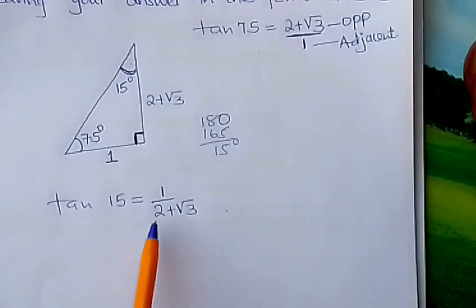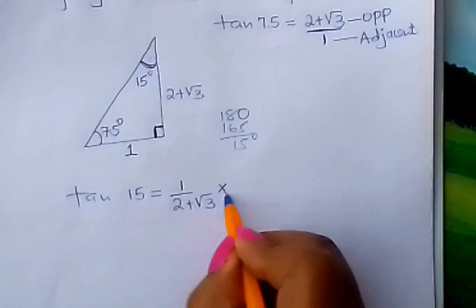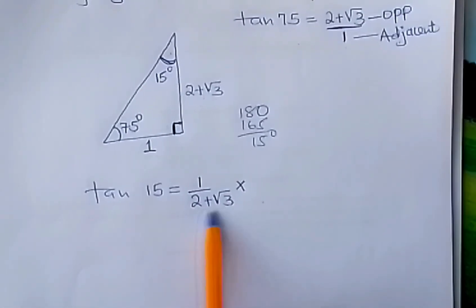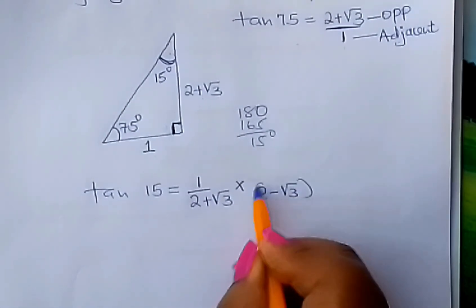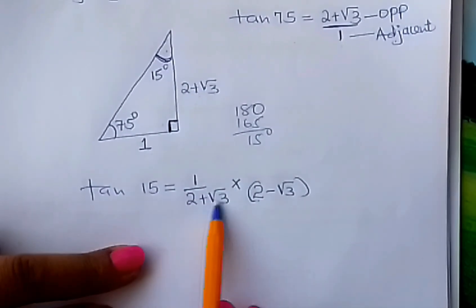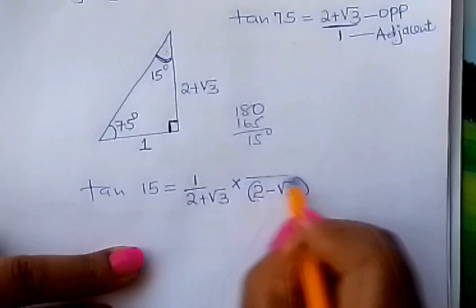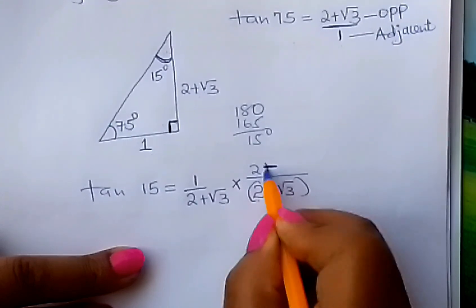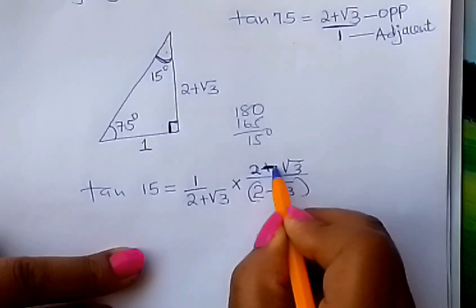From here, learner, we work out this side. How do you rationalize this? You multiply with the conjugate of the denominator, which is 2 minus root 3. If this is 2 plus root 3, the conjugate is 2 minus root 3. And therefore, you multiply with it down here and also up here.